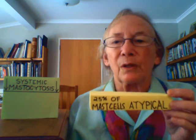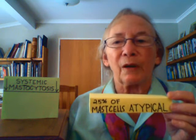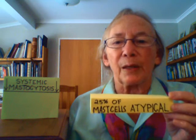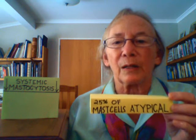The four minor criteria are: first, in the bone marrow biopsy tissue, more than 25% of the mast cells are not typical in their shape.